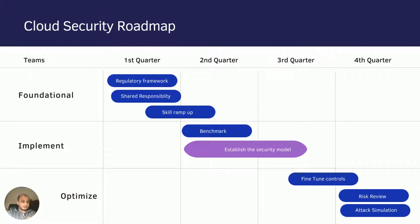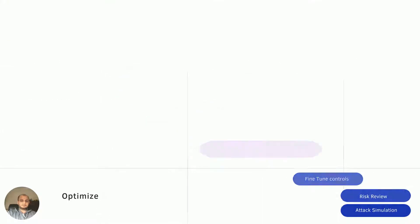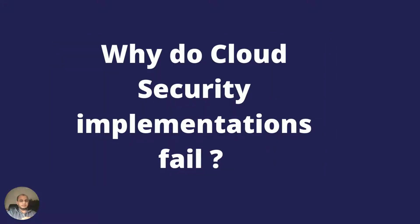But one key question remains: what next? You've put in a roadmap, you've gone through it and implemented it — what happens after the roadmap is implemented? That brings us to the topic of this video: why you need to have a proper security governance model in place, which puts a framework in place for maintaining your cloud security posture.